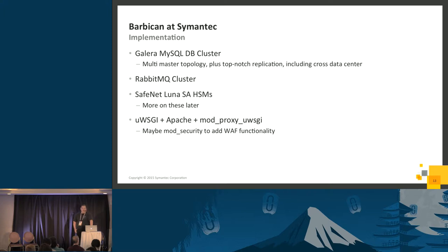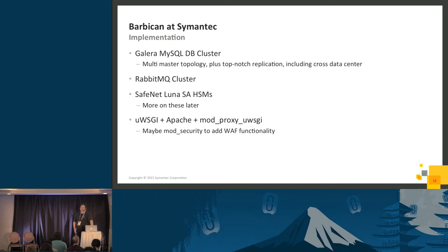We've got a RabbitMQ cluster for messaging and SafeNet Luna hardware security modules for our root of security trust. For the API nodes, we're running Barbican in a uWSGI container with Apache and mod_proxy_uwsgi in front. We wanted Apache for a convenient place to insert filters into the request pipeline and to offload TLS processing. We're considering inserting mod_security to write web app firewall rules for Barbican, detecting bad requests at the Apache layer. This also provides a nice point to insert metric submissions without touching the Barbican code.